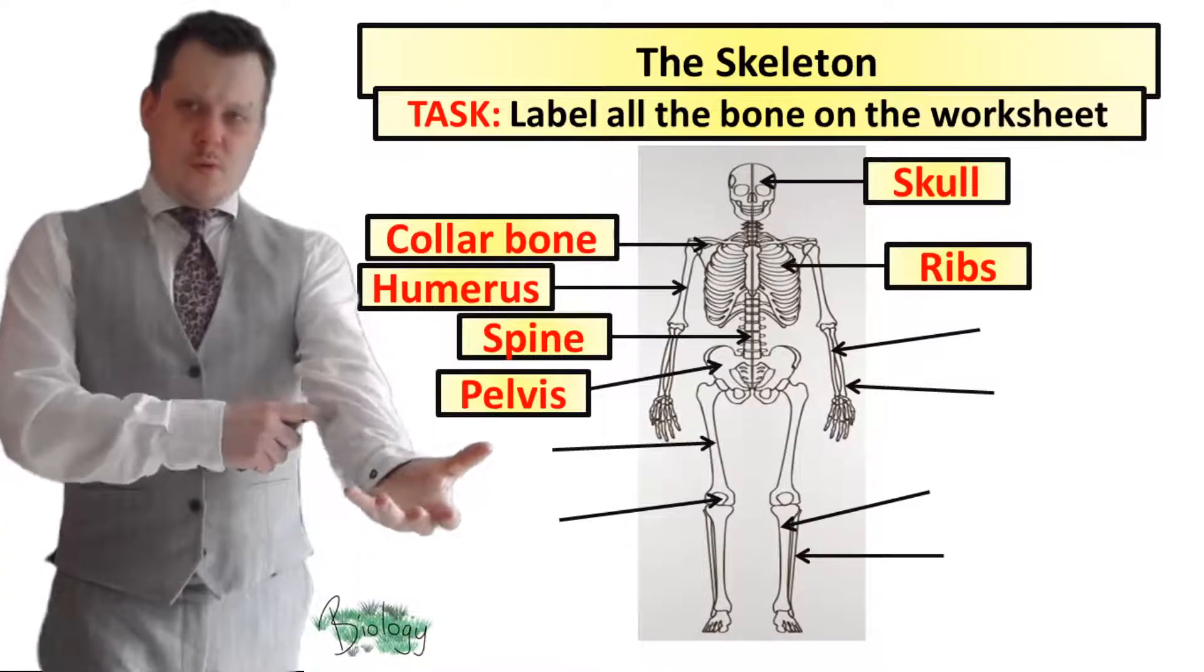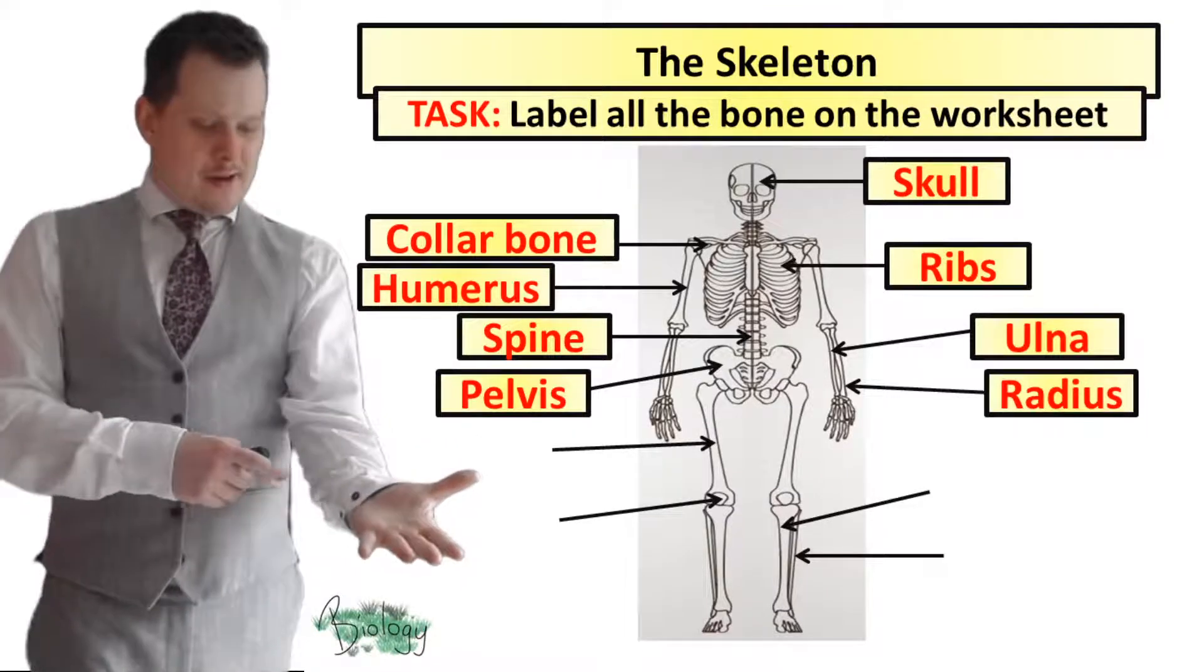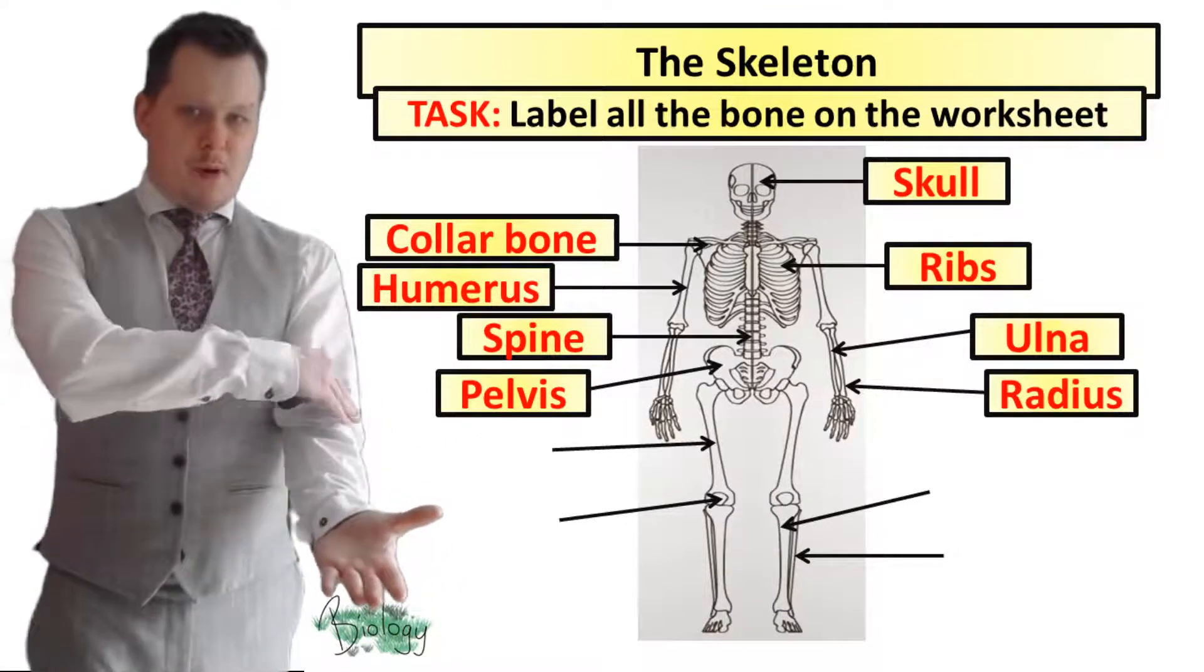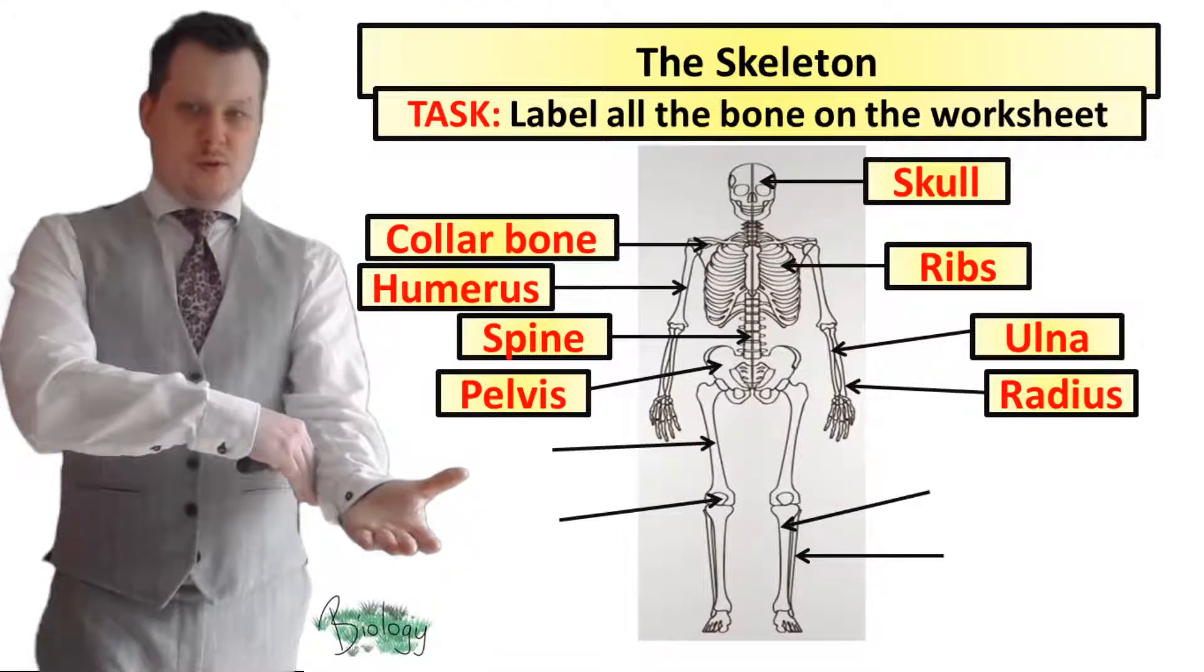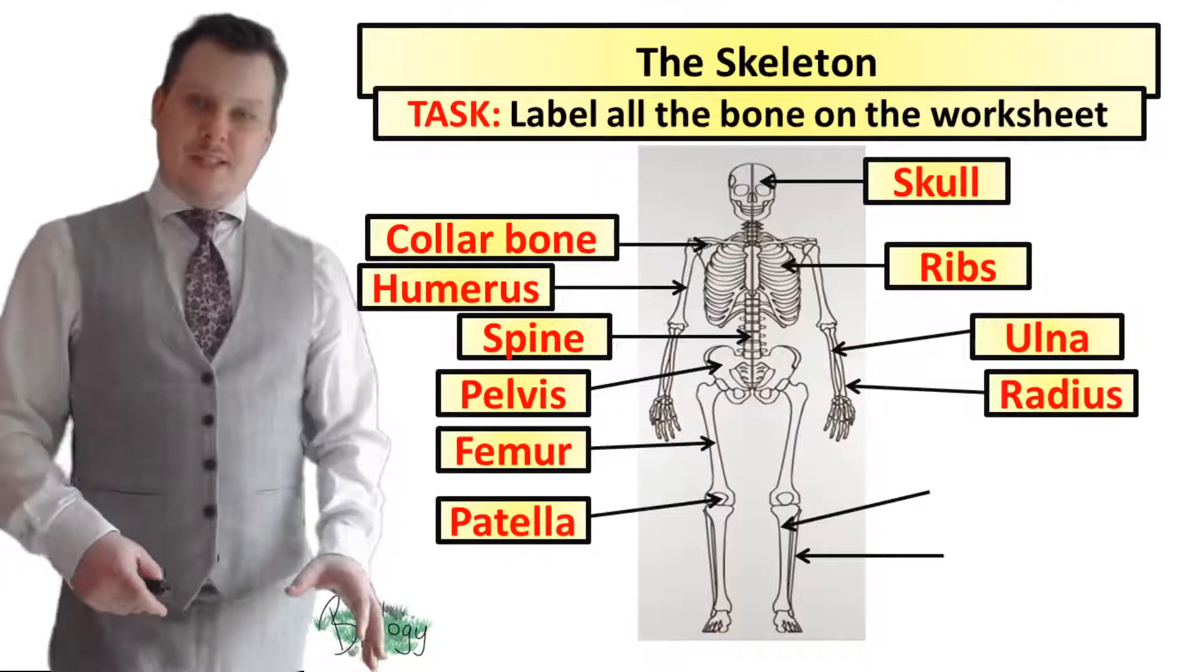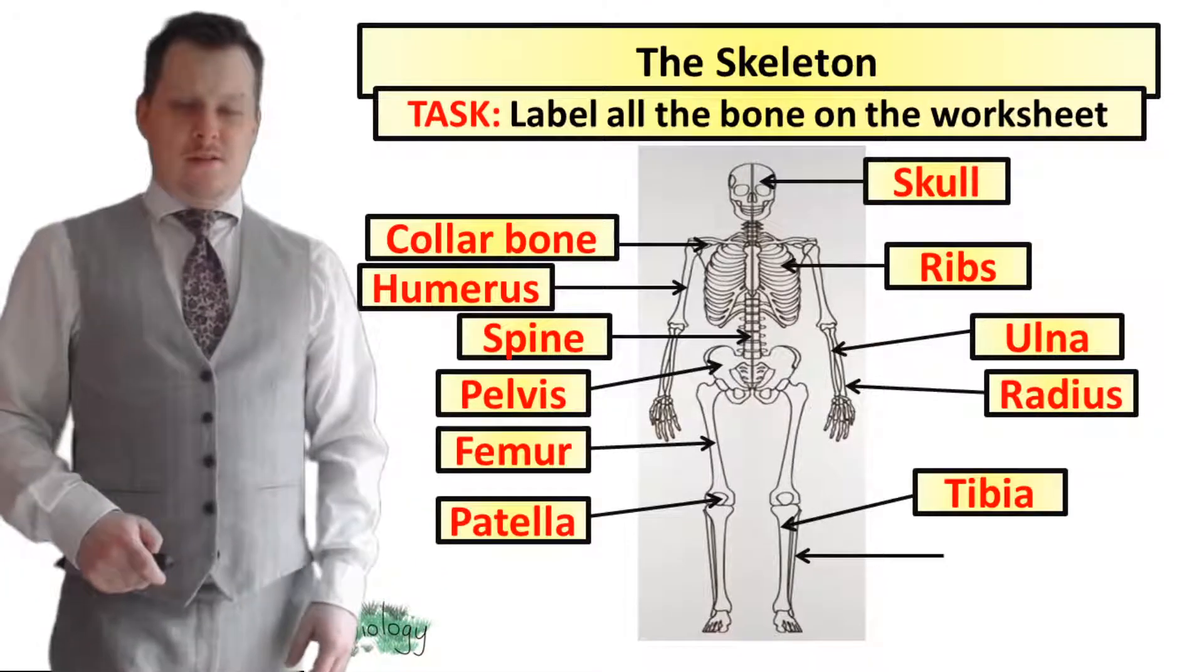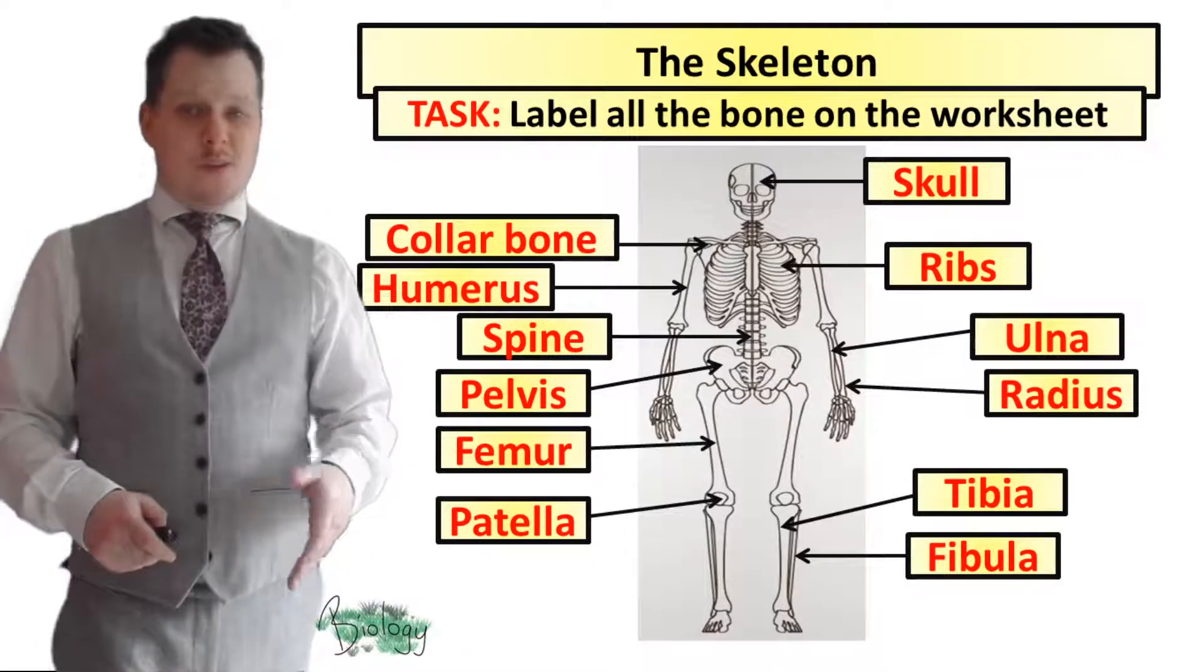We've got two bones in the forearm: the ulna and the radius. If you hold out your hand with your palm facing forward then the bone on the same side as your thumb is your radius and the other side is your ulna. You've then got your femur which is the big bone in the leg, then your patella which is another name for the kneecap. You've then got the tibia which is the shin at the front and your fibula which is at the back.